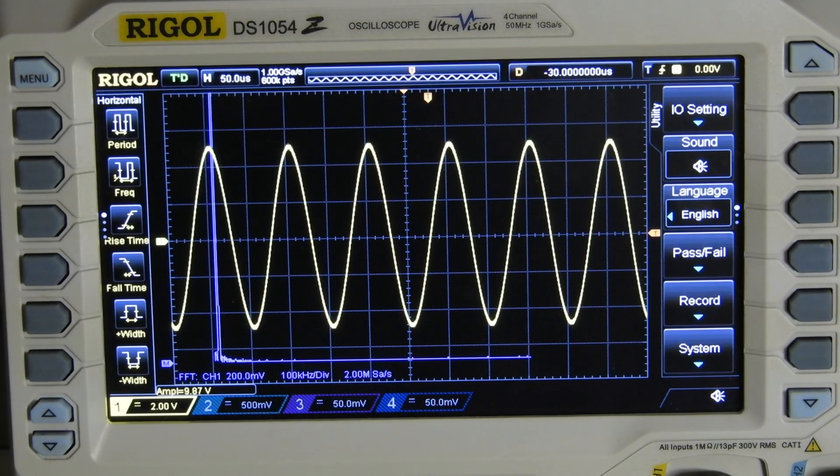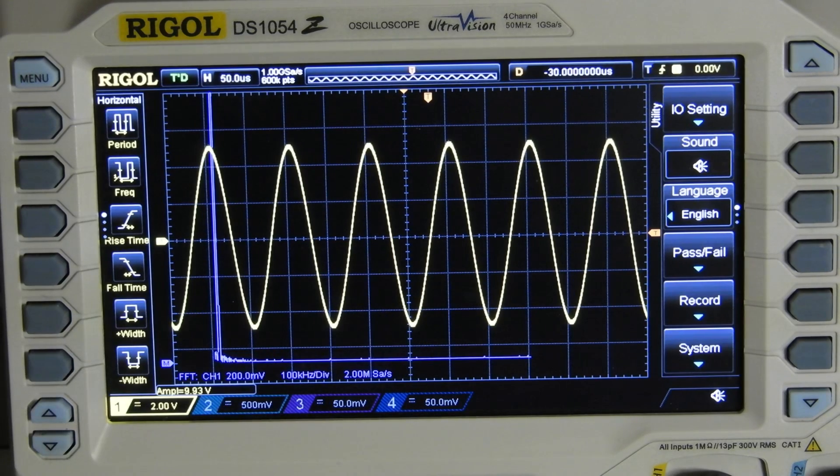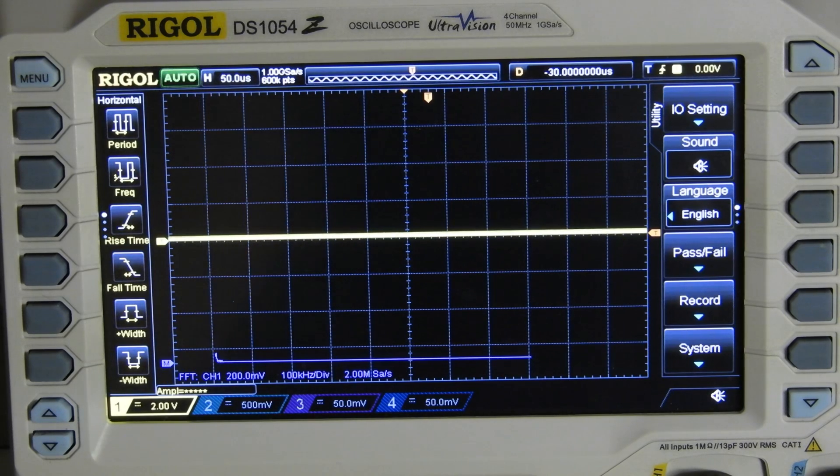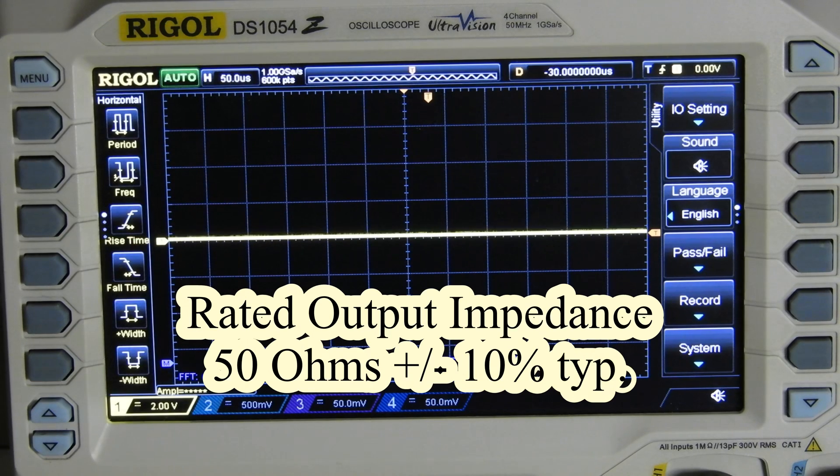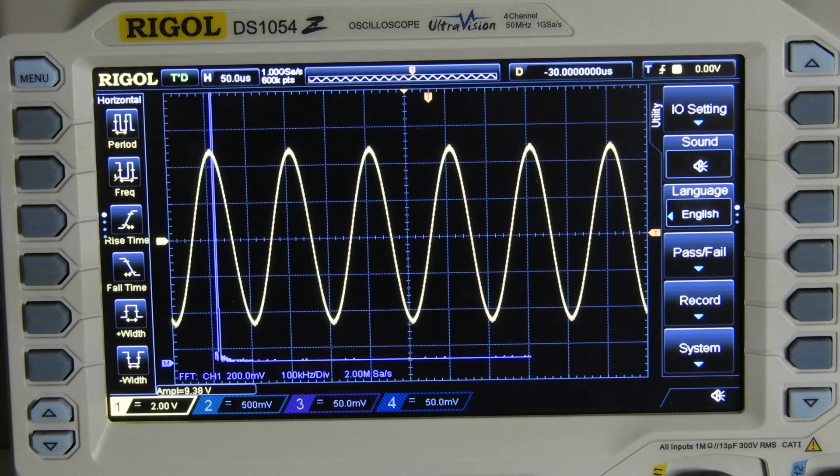I have the generator set to 10 volts. You can see on the scope I'm getting 9.98 or something like that. That's driving this little amplifier right now. I'm going to open it up so it's open circuit. I'm going to throw a 1K resistor across the output of this thing while I watch it on the scope. Let me reconnoiter my instruments.